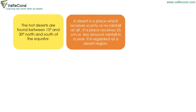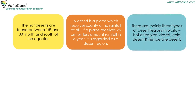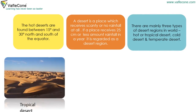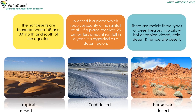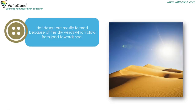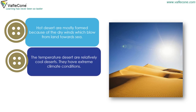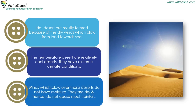A desert is a place which receives scanty or no rainfall at all. If a place receives 25 cm or less rainfall in a year, it is regarded as a desert region. There are mainly three types of desert regions: hot or tropical desert, cold desert and temperate desert. Hot deserts are mostly formed because of dry winds which blow from land towards sea. Temperate deserts are relatively cool deserts with extreme climate conditions. Winds which blow over these deserts do not have moisture and hence do not cause much rainfall.